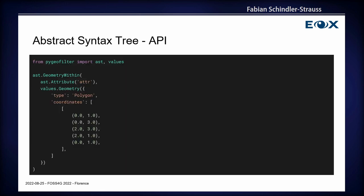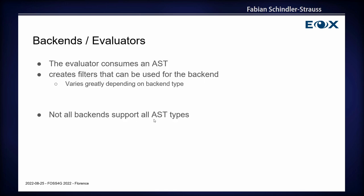This is also possible — for whatever reason you want to construct an abstract syntax tree in Python, you can simply do that. It's a simple module and there are just objects that you combine. For example, we have here a geometry-within predicate, and you pass in the left-hand side and the right-hand side. The left-hand side is just an attribute access and we want to access the 'utter' attribute. And on the right-hand side, we are simply passing in a geometry which we want to compare it to.